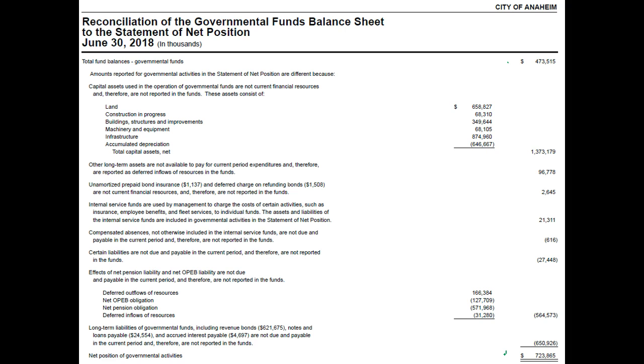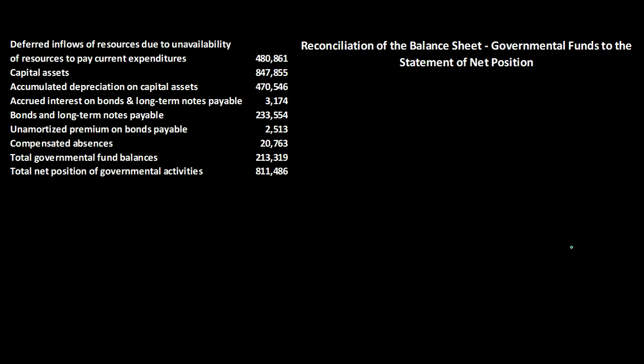That's the basic process in terms of an example. Let's go through an example problem and list some of these items out. The reconciliation of the balance sheet governmental funds to the statement of net position — we've listed out the reconciling items and we'll go through them as we do this reconciliation process.